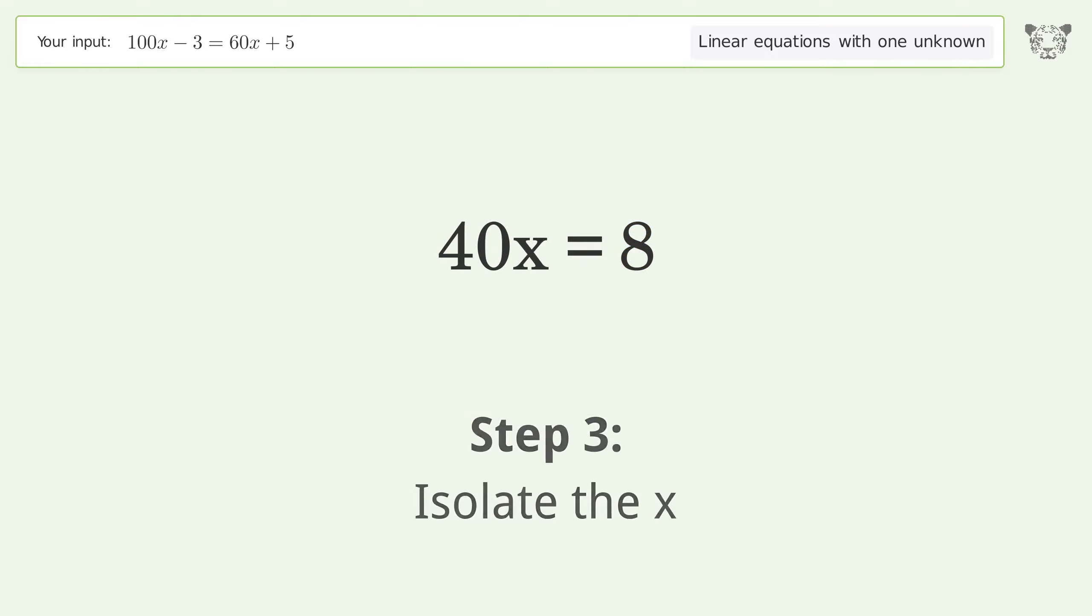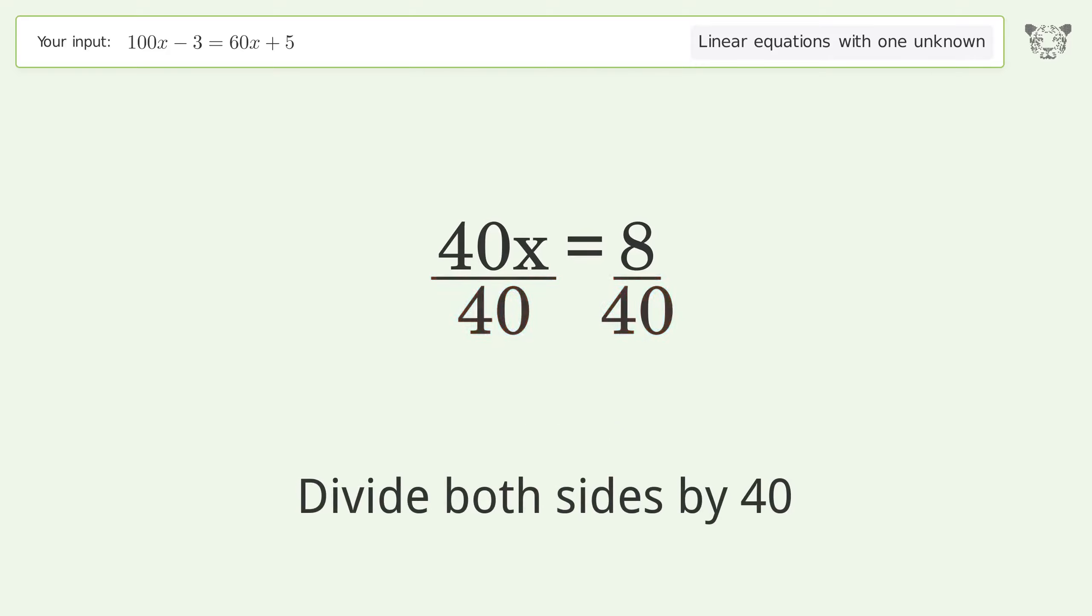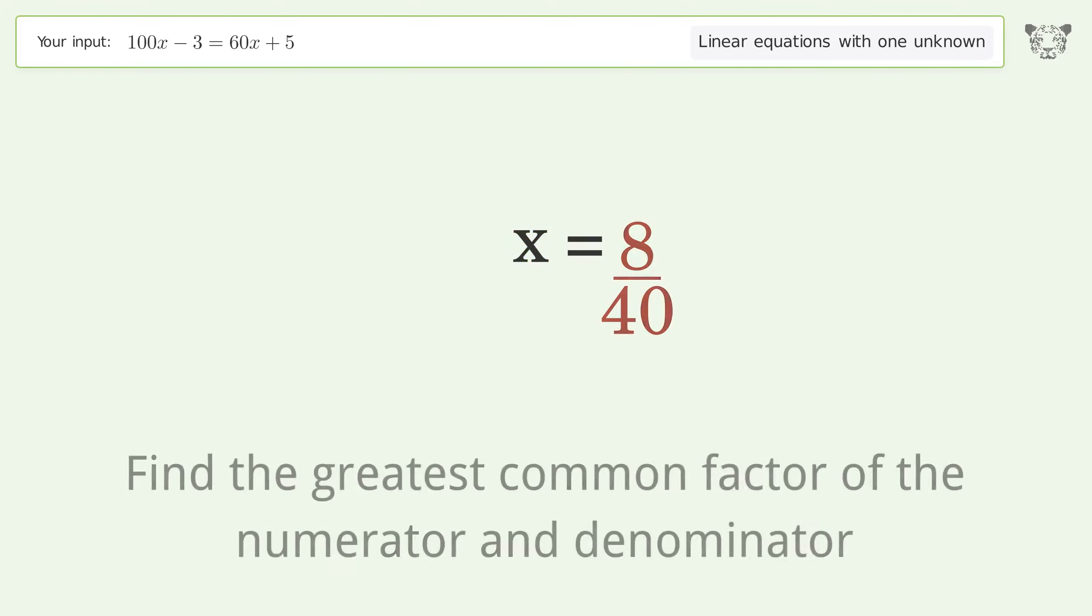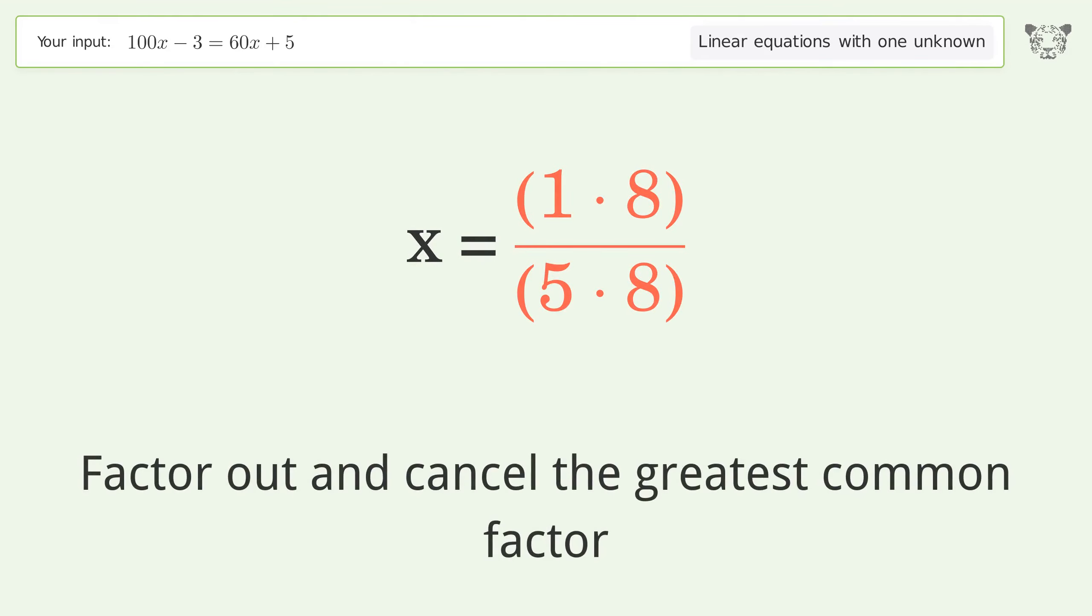Isolate the x. Divide both sides by 40. Simplify the fraction. Find the greatest common factor of the numerator and denominator. Factor out and cancel the greatest common factor.